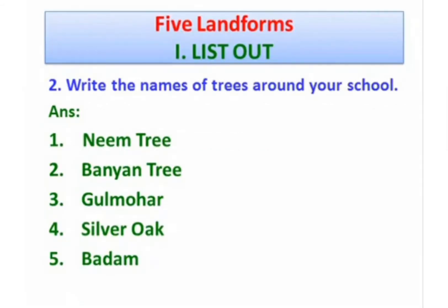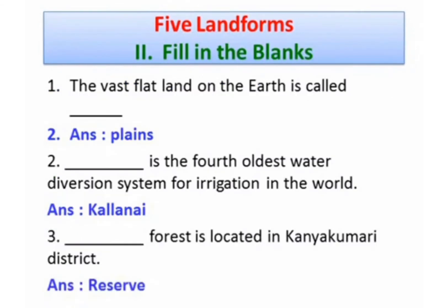Second section: write the names of the trees around your school. A tabular column with serial numbers is given. First tree: Neem tree. Banyan tree. Gulmaha tree. Silver Oak. Badam tree.